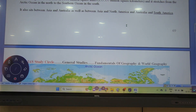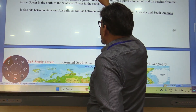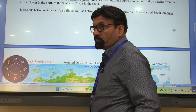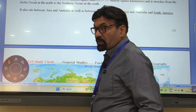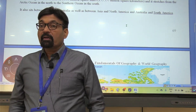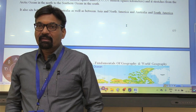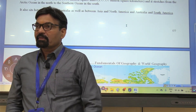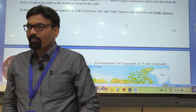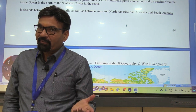Coming to the major oceans of the world. Number one is the Pacific Ocean — no doubt it is the largest ocean. It contains 50 percent, that is half, of the water found in oceans. Its area covers around 28 to 29 percent of the total water body surface, which is the highest percent among all oceans. That means its area is almost equivalent to the collective area of all the continents.